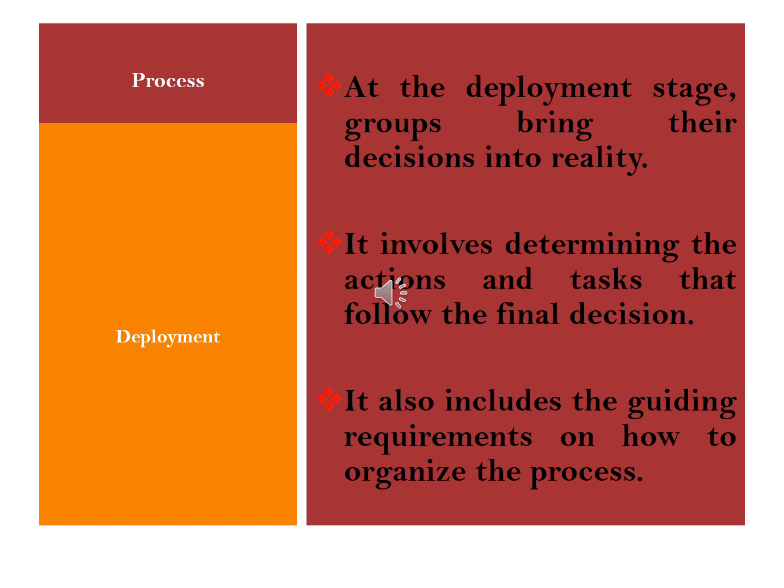The next stage of the decision making process is called deployment. At the deployment stage, groups bring their decisions into reality. It involves determining the actions and tasks that follow the final decision and includes guiding requirements on how to organize the process. Deployment basically means that a given alternative has been picked, and the next thing is to use that alternative to solve the problem the group had identified as requiring a decision.